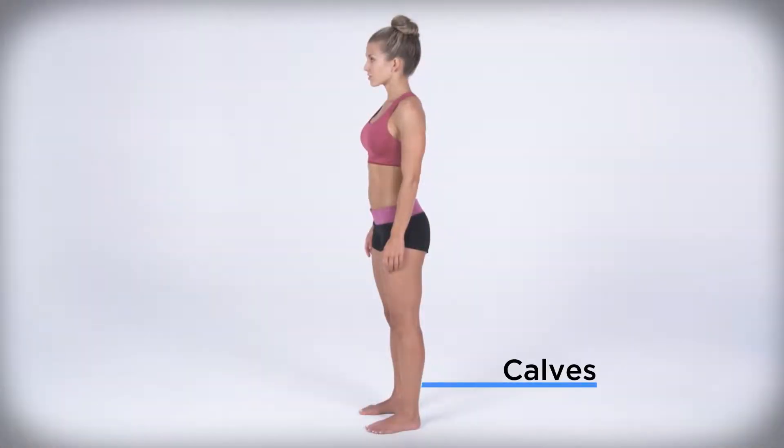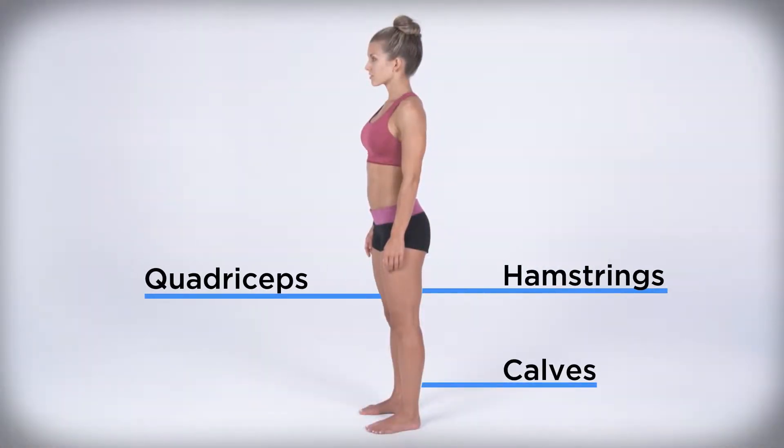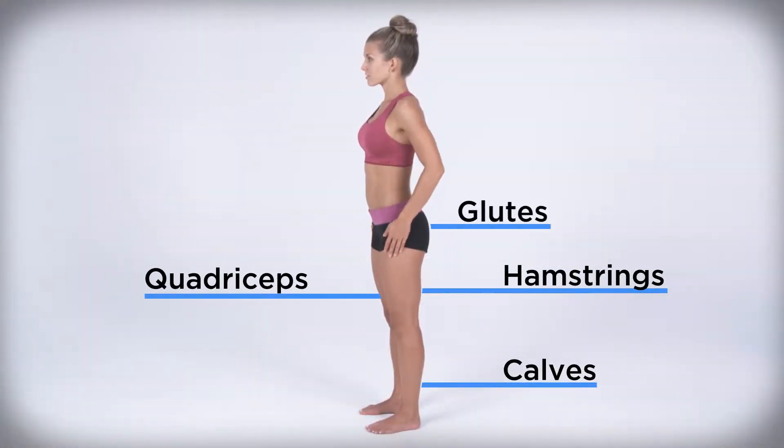So let's look at a popular lower body strengthening exercise: the squat. Squats strengthen the lower muscles of the legs, including the calves, the hamstrings, the quadriceps, and the glutes. We use these muscles for everyday activities such as walking, running, getting up from your chair, going up and down stairs, or even jumping.